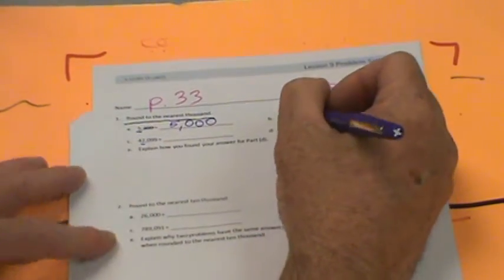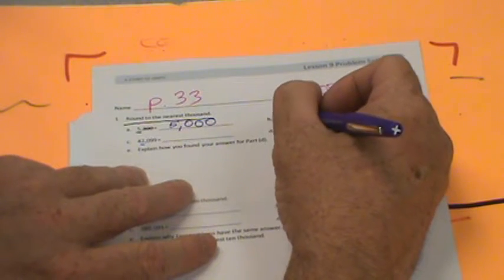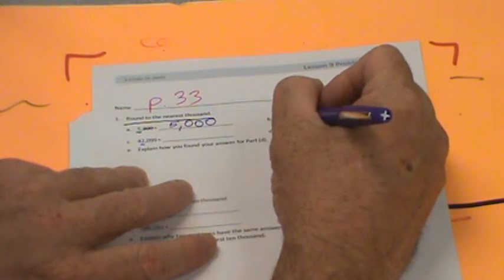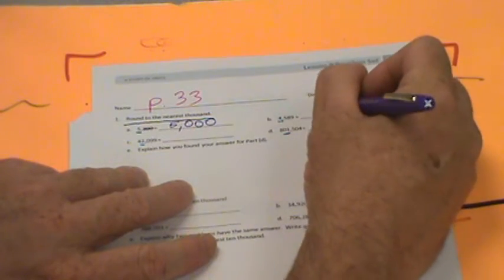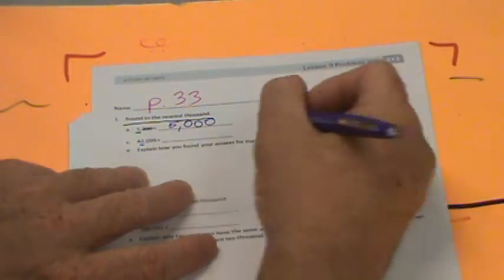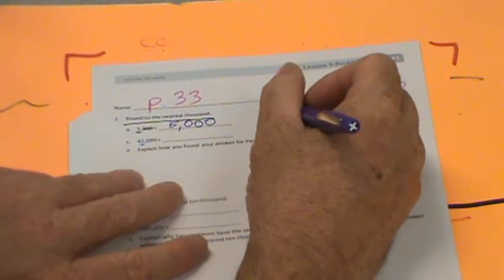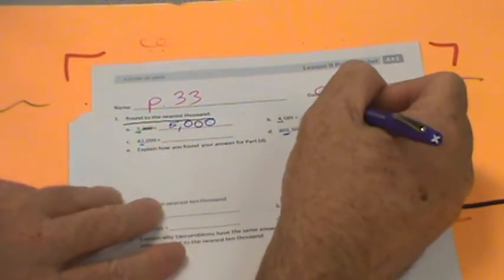Let's go over here. We have 4,589. Is 589 greater than 500, the midway point? Yes, it is. So I'm going to do my zeros, my comma, and this is not going to go down to 4 because it's closer to 5,000, so it'll shoot up to 5,000.